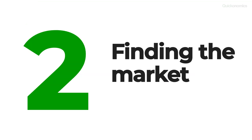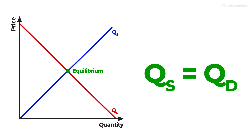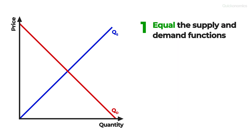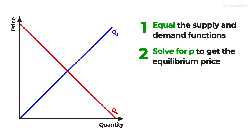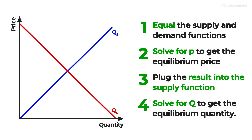Now let's move on to step 2: finding the market equilibrium. The market equilibrium is located at the intersection of the supply and the demand curve — that's where supply equals demand and the market clears. To find that spot, we first have to set the supply and demand functions equal to each other and solve for p. This gives us the equilibrium price. Then we can plug this number back into the supply function and solve for q to get the equilibrium quantity.